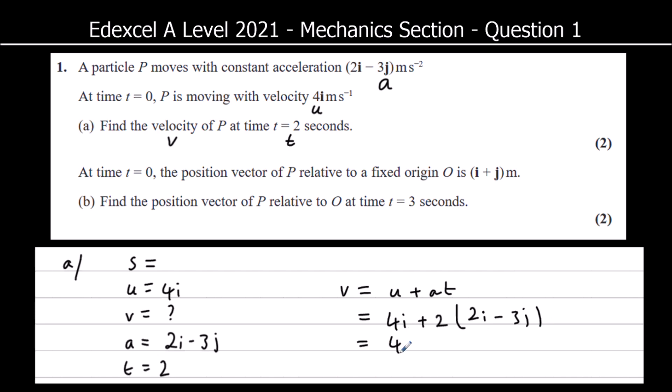So if we just expand this bracket and then collect the like terms, we've got 8i minus 6j. And it's in meters per second.